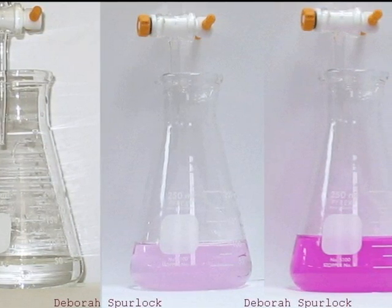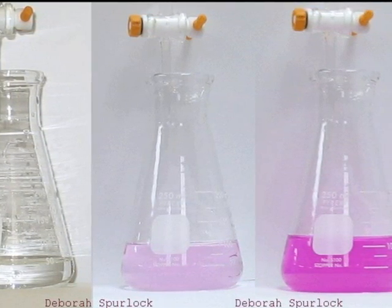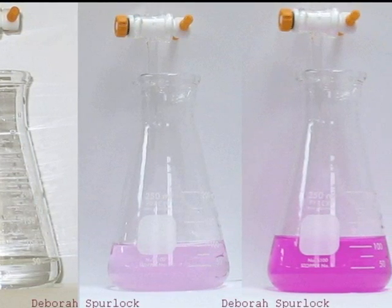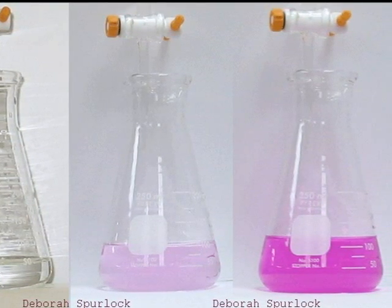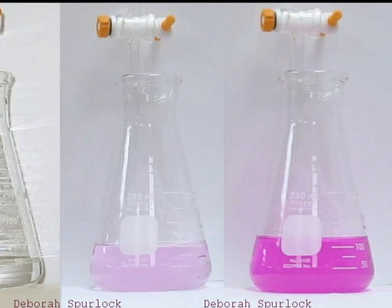The phenolphthalein changes from colorless in acid to pink in base. The examples show an acidic solution on the left, a basic solution on the right, and a solution at the end point in the center.